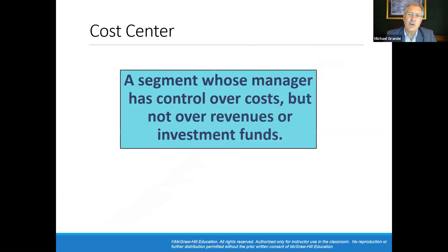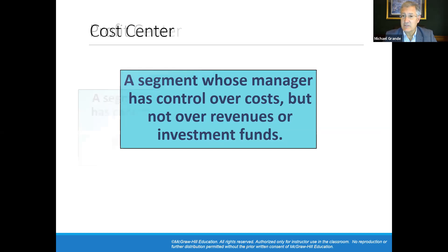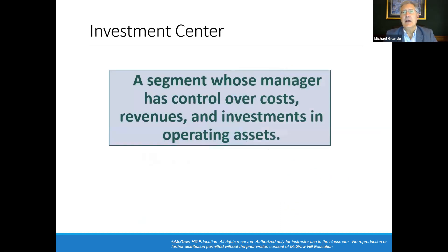A cost center is the lowest level of the organization — it's a segment whose manager has control over only the costs, not revenues and not operational assets. The next level is a profit center: a segment whose manager has control over both costs and revenues, but not over operational assets. And lastly, an investment center — the one we're going to be talking about — is a segment whose manager has control over costs, revenue, and investment in operating assets.